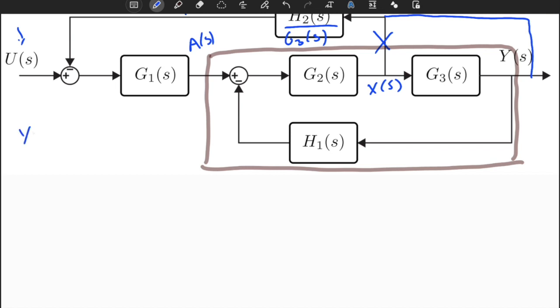y of s divided by a of s is equal to the feedforward part, which is equal to G2 of s times G3 of s, over 1 plus H1 of s times G2 times G3. I'll just remove the s's to simplify the structure a little bit. So G2 times G3 divided by 1 plus H1 G2 and G3.